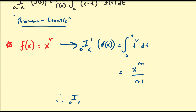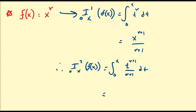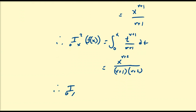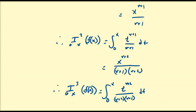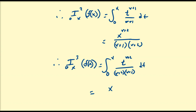The second integral of f(x) is going to be equal to the integral from 0 to x of t^(ν+1) over (ν+1) dt, which equals x^(ν+2) all over (ν+1)(ν+2). Continuing to the third integral, this is going to be equal to the integral from 0 to x of t^(ν+2) divided by (ν+2)(ν+1) dt, giving us x^(ν+3) all divided by (ν+3)(ν+2)(ν+1).